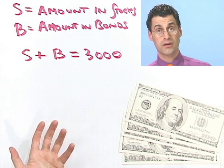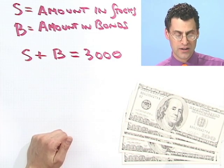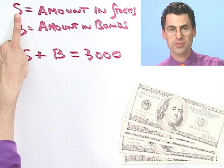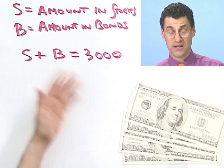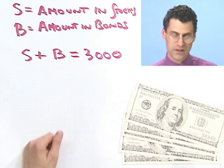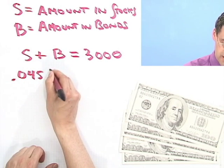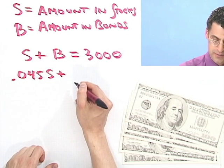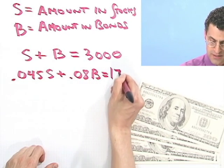What else do I know? Well, I know how much interest I got after a year. And how was the interest distributed? Well, I know that I got 4.5% of S, and I got 8% of B, and that total was $177. So I could write it this way: 0.045 times S plus 0.08 times B equals $177.